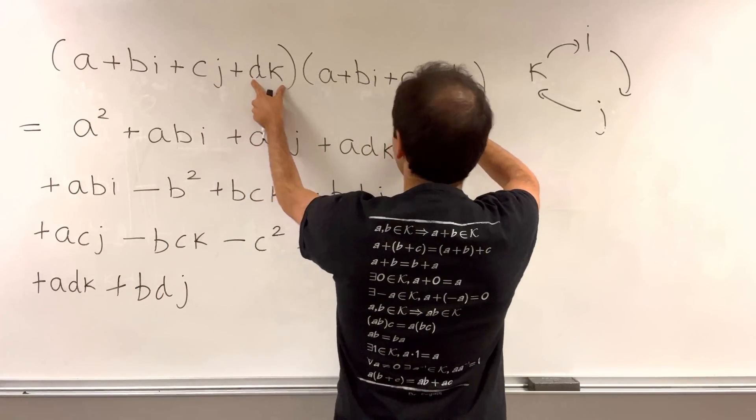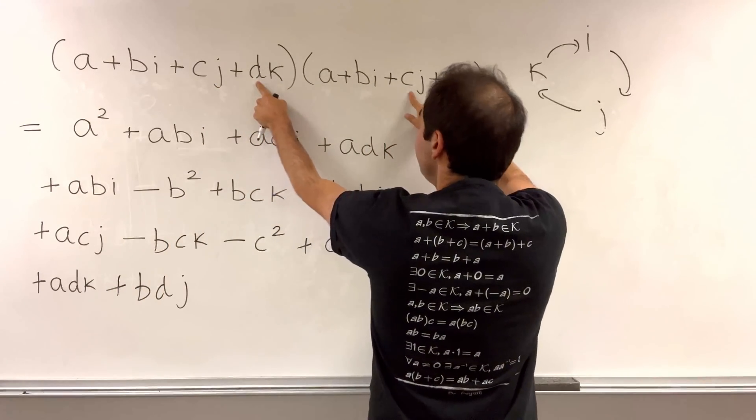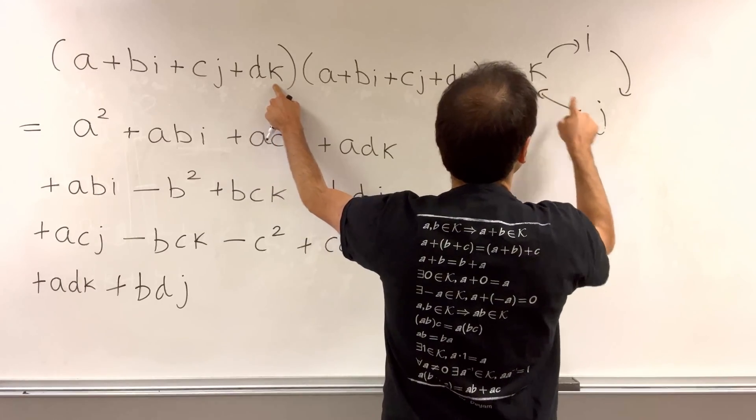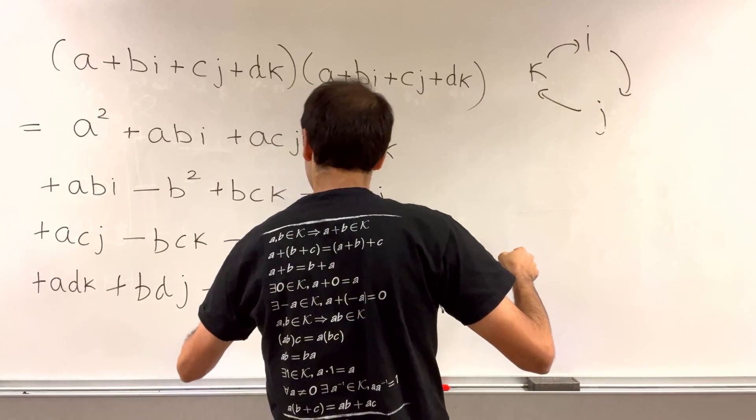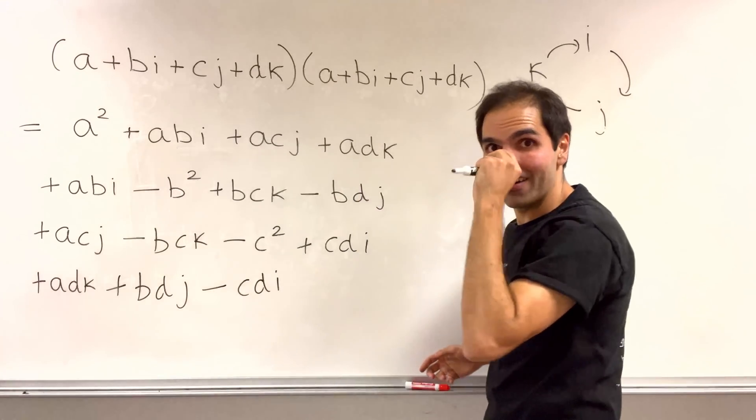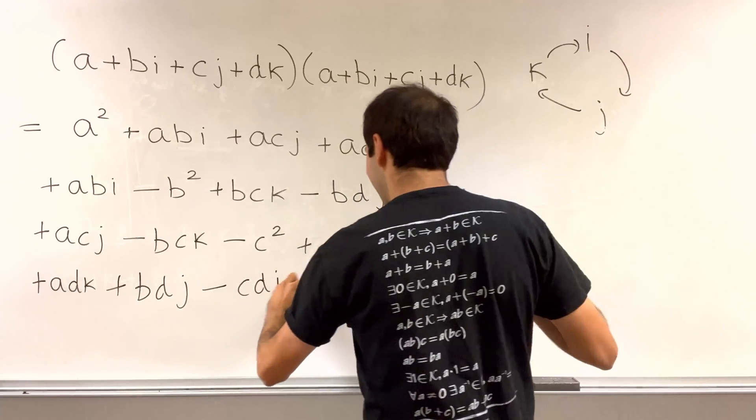Now, dk times cj, so dc, k times j, which is minus i, so minus cdi. And last but not least, Donkey Kong times Donkey Kong is minus d squared.